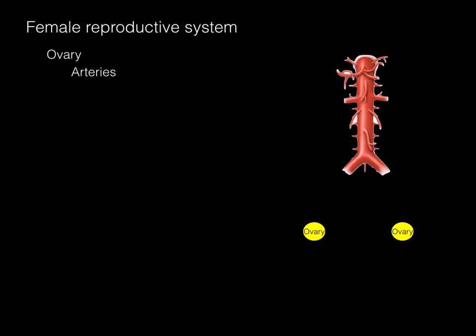ensure that the implantation in the endometrium is sufficient to sustain the life of that developing embryo. Here we have the aorta with the two ovaries below. The arterial supply is primarily through the gonadal arteries, which are supplying both ovaries.